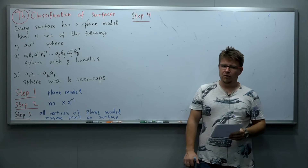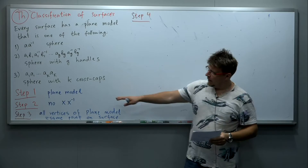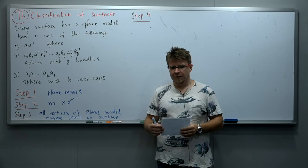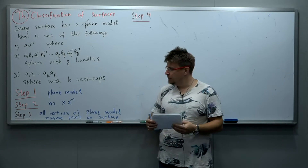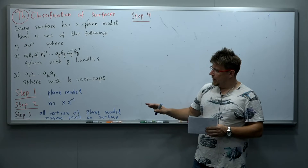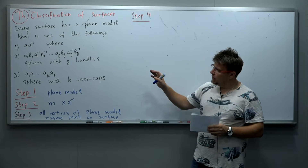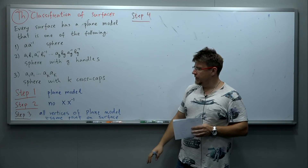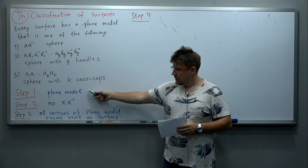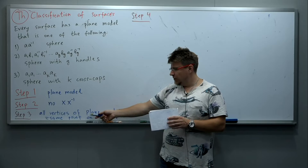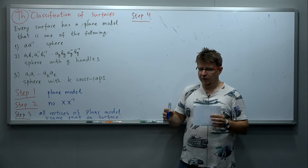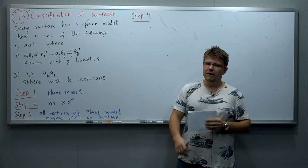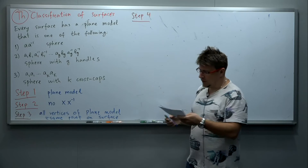We are still doing the classification theorem of compact surfaces. After the three steps of the proof, we see that every surface except for the sphere can be represented by a plane model with all vertices of the plane model that are to be glued to the same point on the actual surface. Let me explain what step four is about.